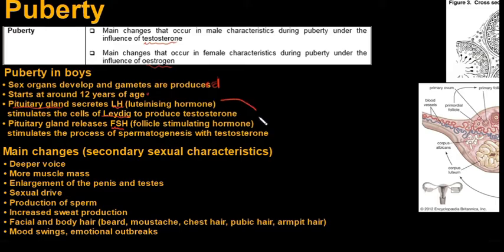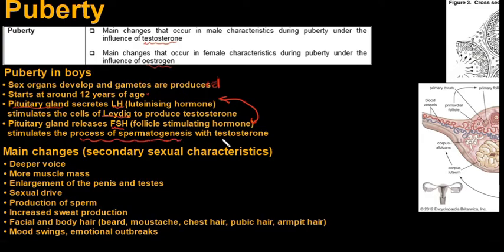The pituitary gland also releases a hormone called FSH, the follicle stimulating hormone. Both LH and FSH also function in the female reproductive system, and we'll look at that when we cover the menstrual cycle and the endocrine system. FSH stimulates the process of spermatogenesis along with testosterone released by the cells of Leydig.